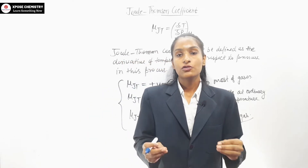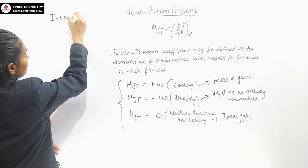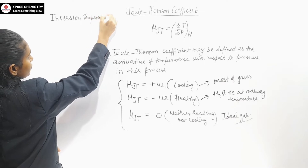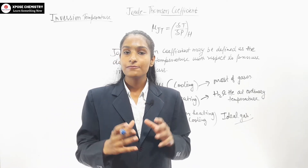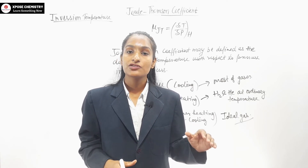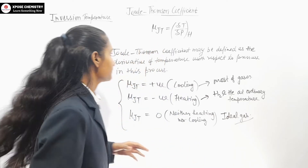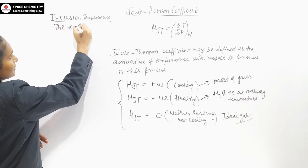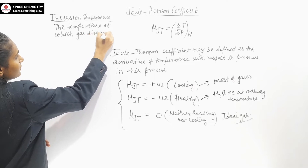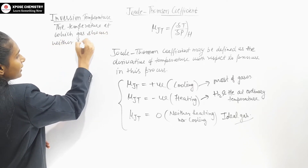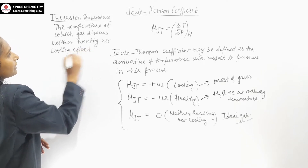This was about the Joule-Thompson coefficient. Next, what is inversion temperature? The inversion temperature is that temperature at which the gas shows neither a heating nor a cooling effect during Joule-Thompson expansion. We call this temperature the inversion temperature.